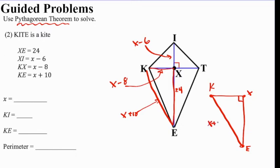From K to X to E, we understand that the diagonals are perpendicular, so that makes this a right triangle. We have x plus 10 on the hypotenuse, we have x minus 8 on one of the legs and 24 on the other leg. So the Pythagorean theorem says take the square of the legs and add them. So we have x minus 8 in parentheses squared plus 24 squared, and that will equal x plus 10, which is the hypotenuse, in parentheses squared.